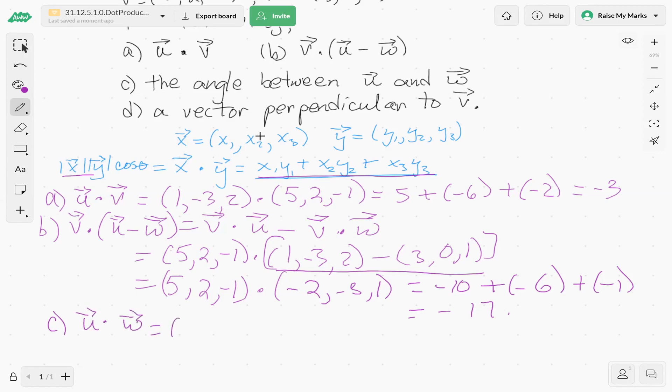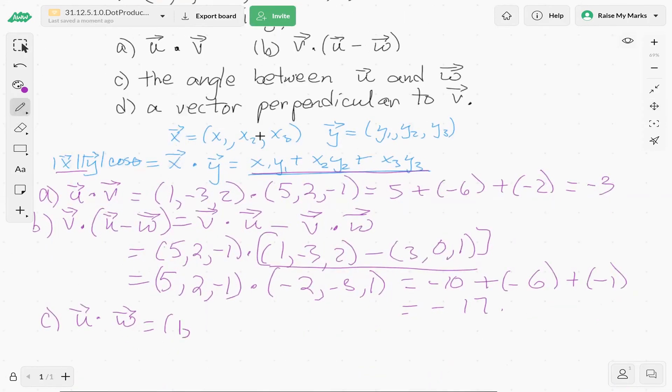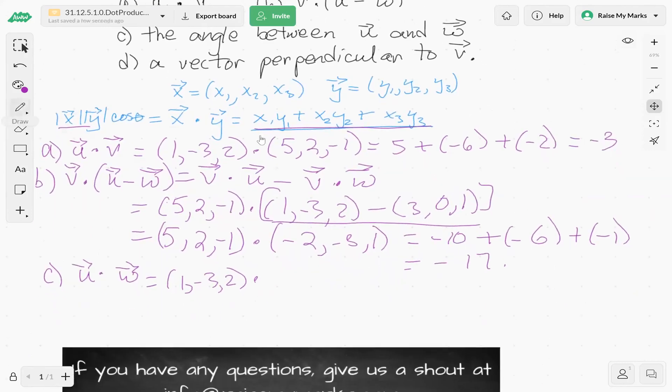So our vector u, what is our vector u again? Our vector u is (1,-3,2). 1, negative 3, 2, dot our vector w, let's have a look. (3,0,1). Okay. 3, 0, 1.